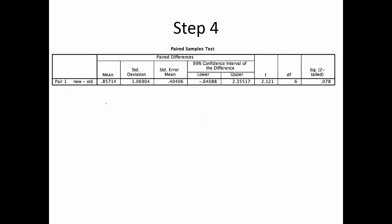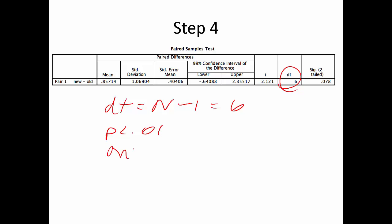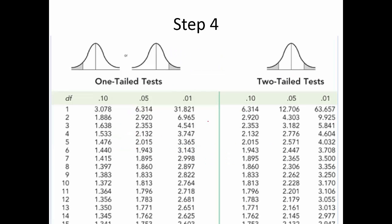Step four: we need degrees of freedom, which is N minus one — that's six. We're working with alpha = 0.01, and we're doing a one-tailed greater-than test as set up in step two. Going to the T table and picking the one-tailed column at 0.01 with six degrees of freedom, the critical value is 3.143.